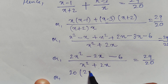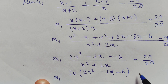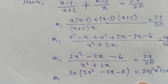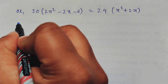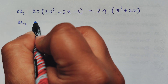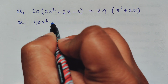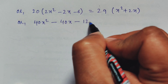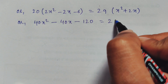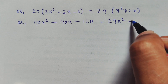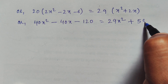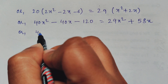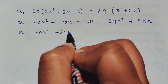Now cross multiplying: 20 times (2x squared minus 2x minus 6) equals 29 times (x squared plus 2x). Expanding the brackets: 40x squared minus 40x minus 120 equals 29x squared plus 58x. Bringing all terms to the left-hand side: 40x squared minus 29x squared minus 40x minus 58x minus 120 equals 0, giving 11x squared minus 98x minus 120 equals 0.